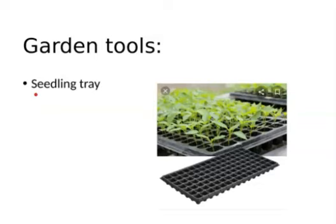Seeds can be expensive for vegetables. If we want to build a kitchen garden, we need common materials like compost. Compost provides nutrients, and all nutrients are needed for germination. We need the nutrients to be composted properly.